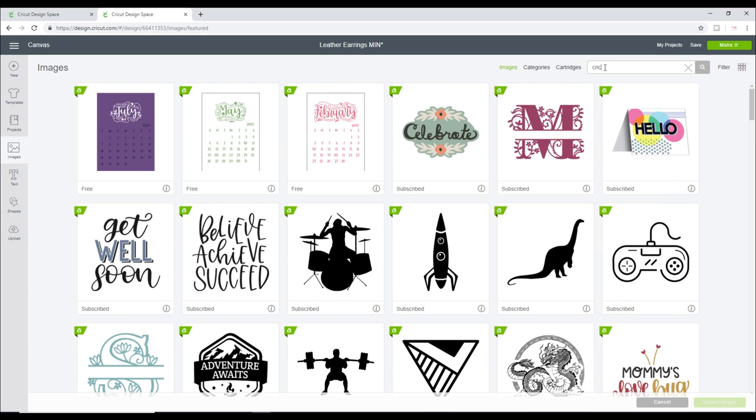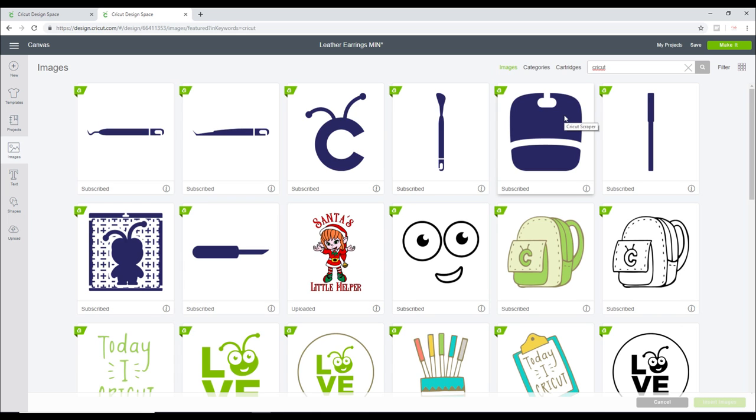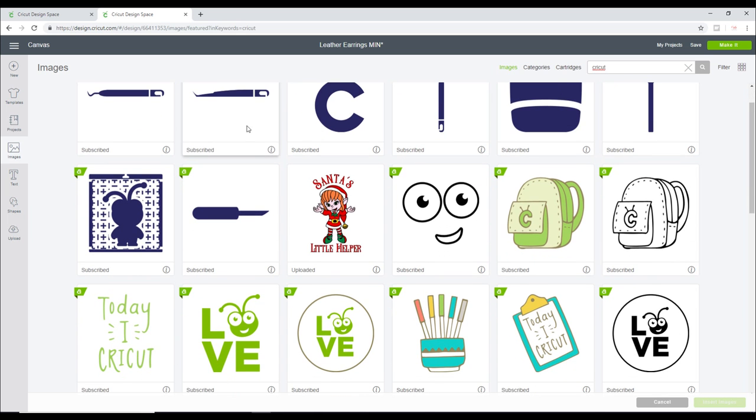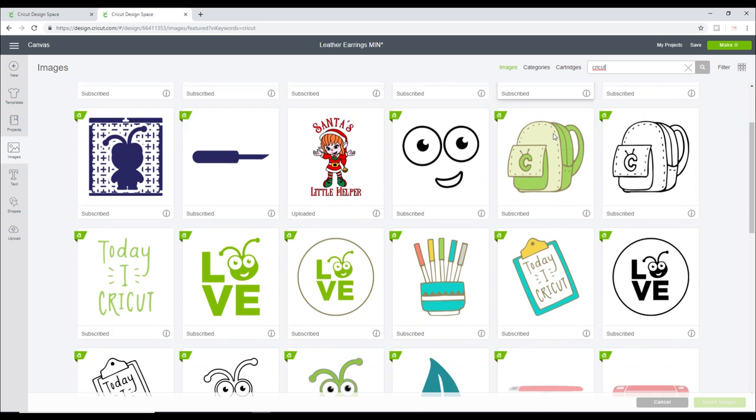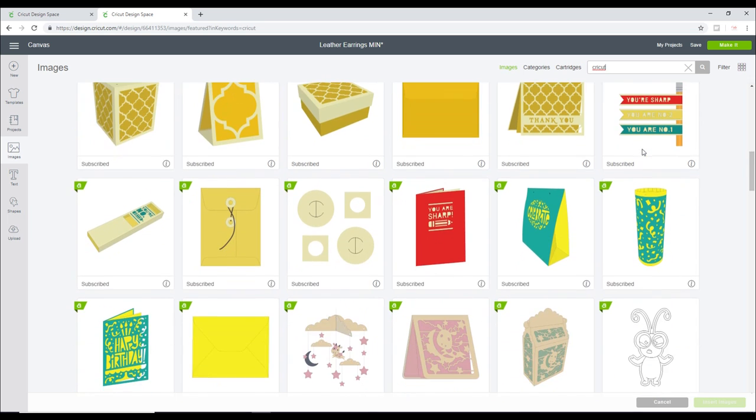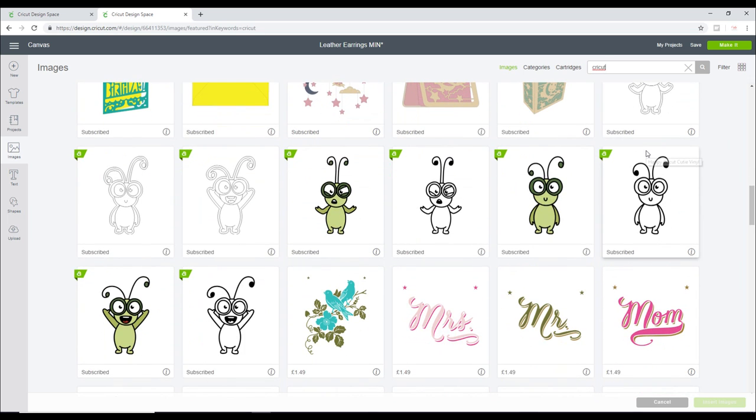I'm then going to go to Images and search for cricket. Can I just say I am loving all the new Cricut images—I love that we've got some of the tools there and the Maker now. I think we've needed them for a long time, so it's really good. I'm then just going to click on the Happy Cricket Cutie and insert image.